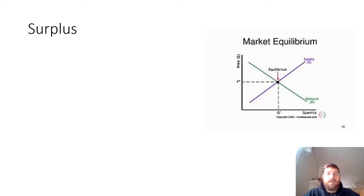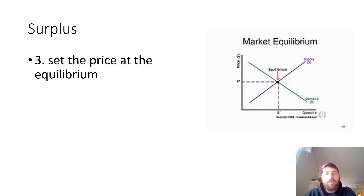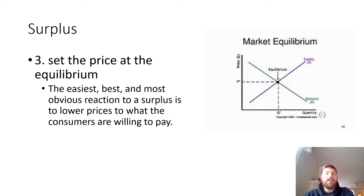By far the best way to deal with a surplus is simply to set the price at the equilibrium. In fact, this is always the best idea. The problem is that equilibrium is constantly changing, so we have to continually adjust. The best way to sell the most stuff at the best prices is to find the equilibrium, make your prices match it, and change your prices when the equilibrium shifts. All healthy companies in America do this, because if they don't, they're not going to be a healthy company for very long — they'll be missing out on a lot of profit.